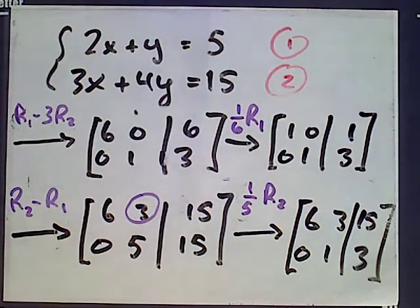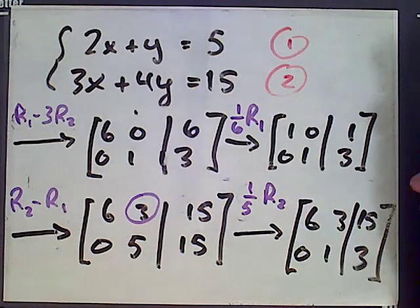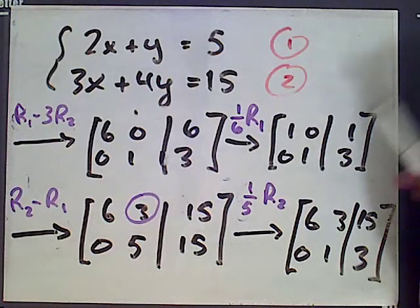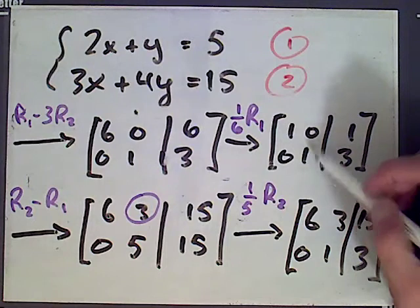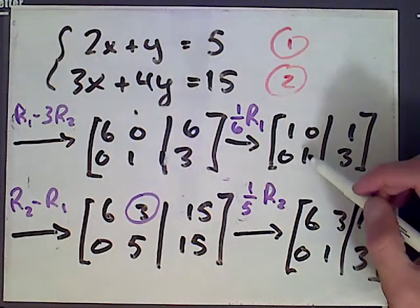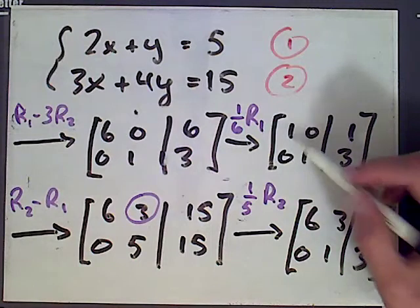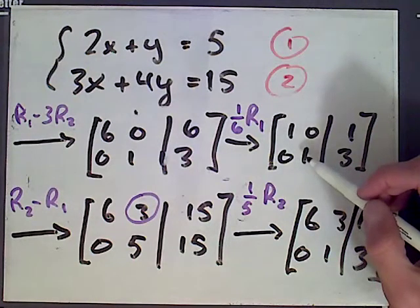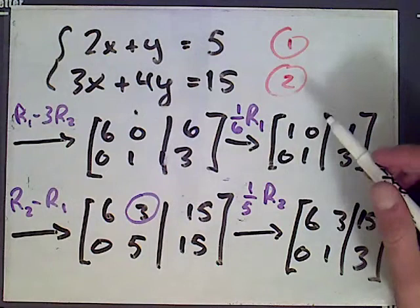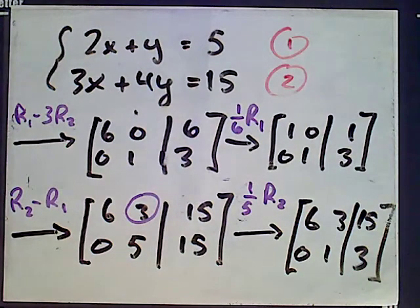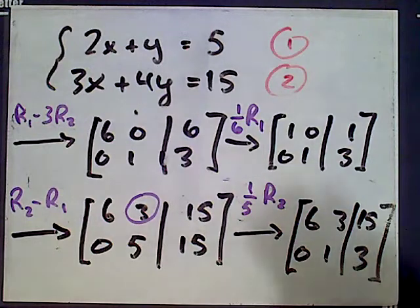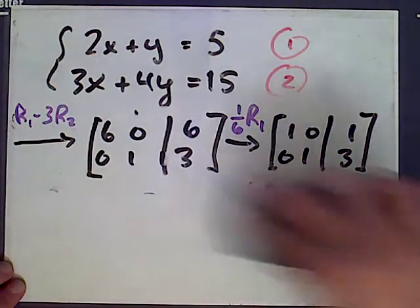Now we have this matrix which is in what's called row reduced echelon form. I don't want to get into the definition explicitly because that's for another video, but what this means is that we have a diagonal of ones with zeros above and below those ones, roughly speaking.